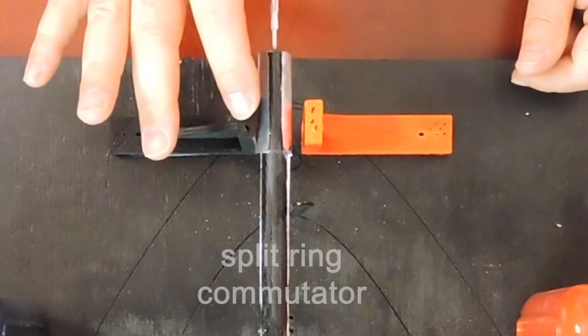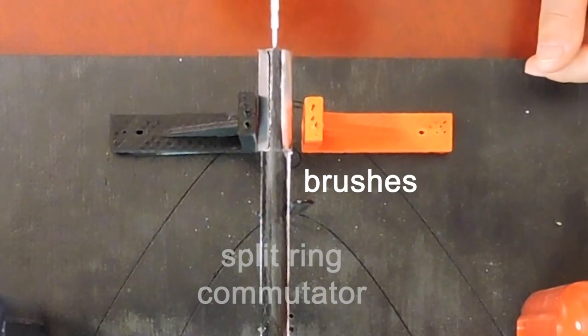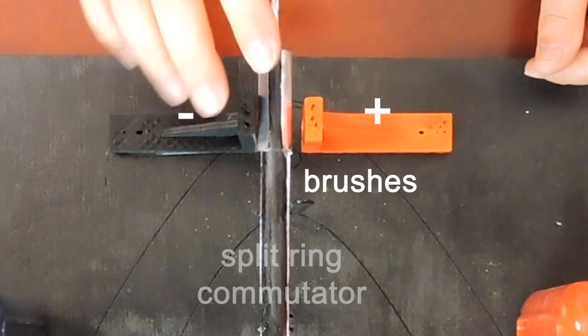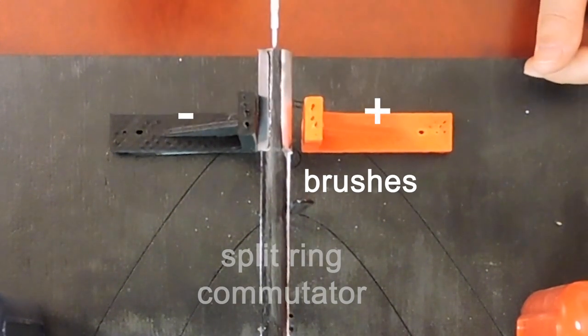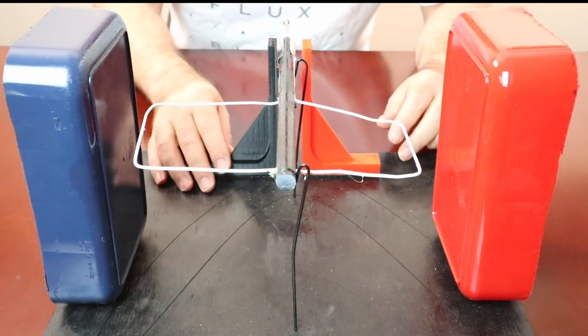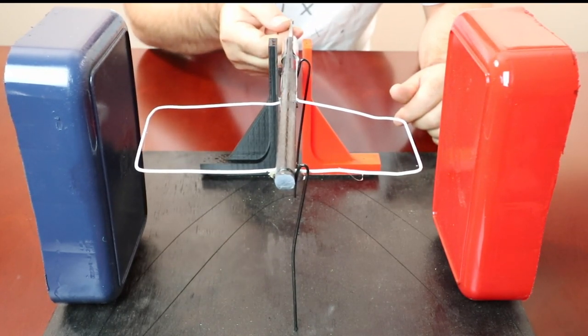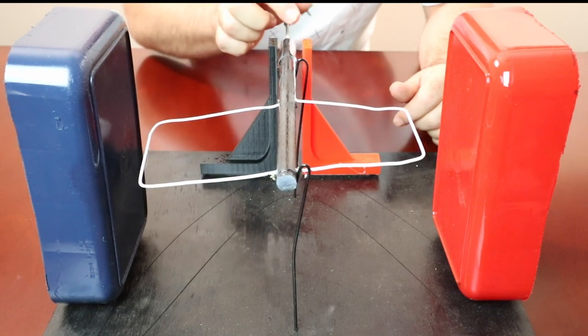Then we have what we call the brushes, which connect the commutator to the power supply. The red is traditionally of course positive and the black is negative. So therefore the conventional current is going to go in from the red and so forth. So let's see how it works. We're going to start in this position. Now we're going to ignore the fact that this is not physically touching. For the sake of my demonstration, we're going to assume that it is touching.